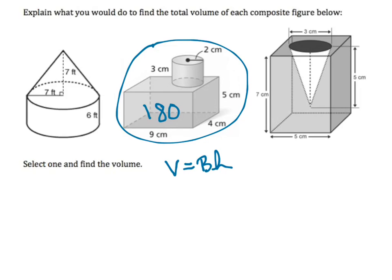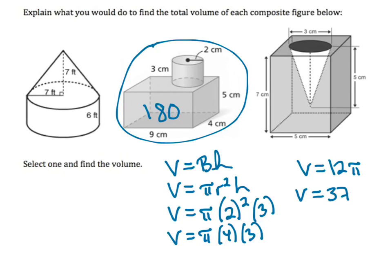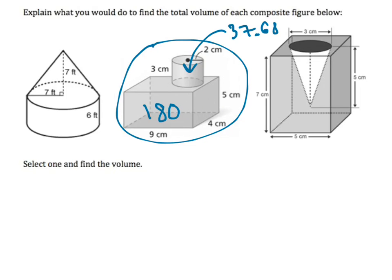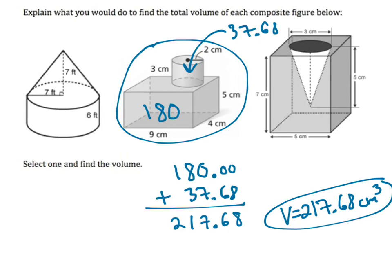Volume of the cylinder: volume equals base times height, but the area of the base is π r², so volume equals π r² times height. The radius is 2 and the height is 3. Volume equals π times 2² times 3, which is π times 4 times 3, giving volume equals 12π, which is about 37.68. Now I add them together: 180 plus 37.68 equals 217.68, so the volume is about 217.68 cubic centimeters.